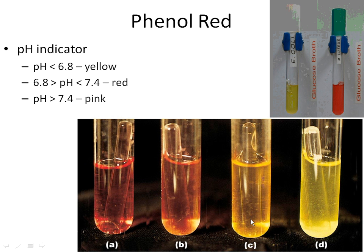Going back to our original pictures, we can look at what's happening in tubes A, B, C, and D. Tube A is still red — no sugar use. Tubes B and C are starting to turn orange, meaning the bacteria is beginning to use the sugar and the pH has gone down slightly. In tube D, it is yellow — the bacteria is using the sugar — and we also see a gas bubble. So this bacteria is using the sugar and producing gas.